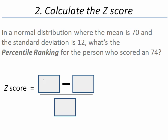For this problem we have our three boxes. The top left box represents the value of 74. What goes in the top right box? If you said 70 to me, you are correct. And what goes in the bottom box? That's right, it's 12, the standard deviation.